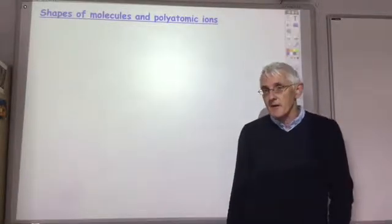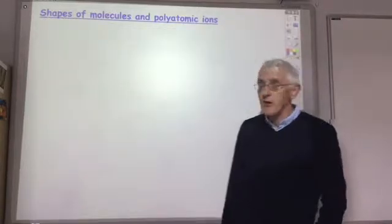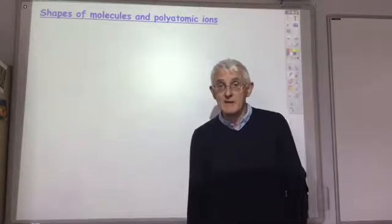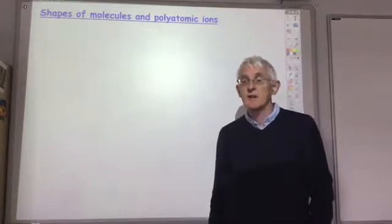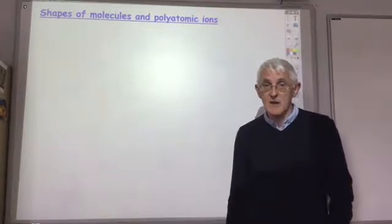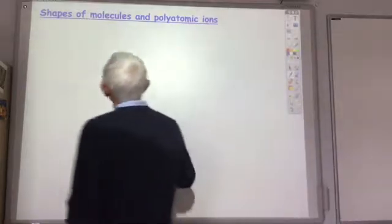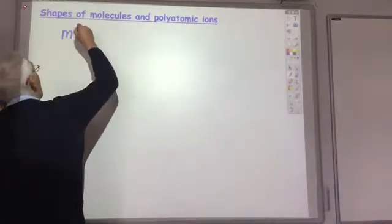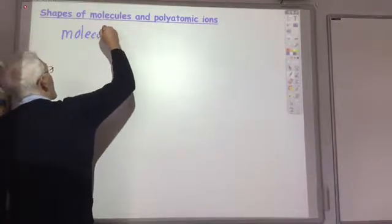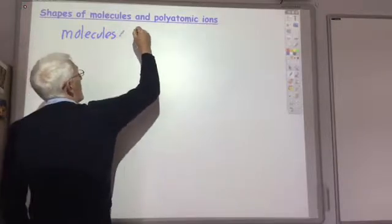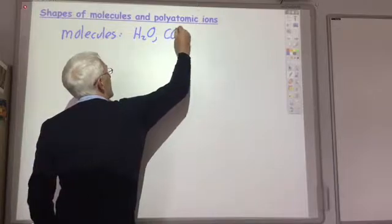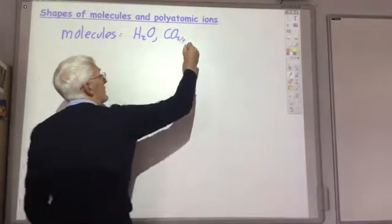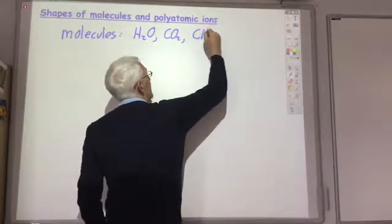Let's start by clearing up what we mean by the terms molecules and polyatomic ions. Molecules are groups of atoms joined together with covalent bonds. So things like water H2O, carbon dioxide CO2, methane CH4.